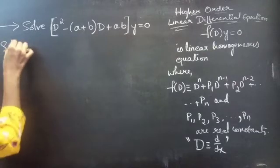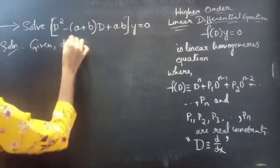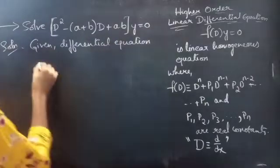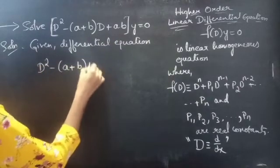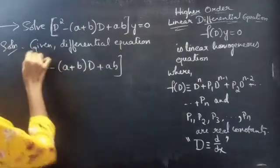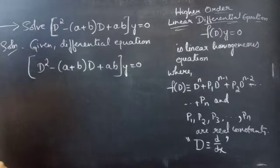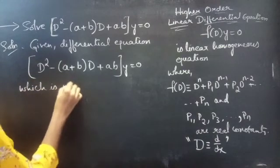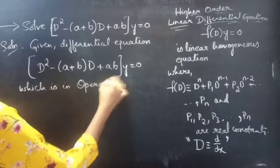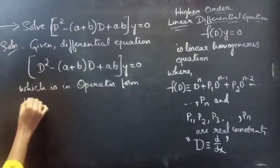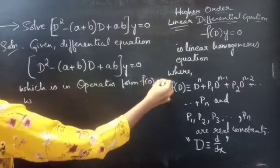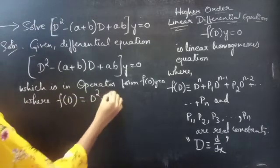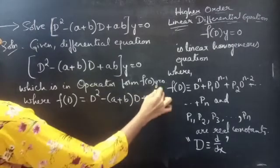Solution. Given differential equation: D squared minus (a plus b) times D plus ab, into y equals to 0, which is an operator form. Where operator form f of D into y equals to 0, and f of D equals to D squared minus (a plus b) into D plus ab.